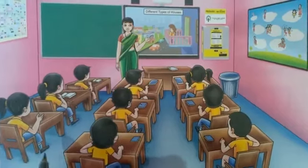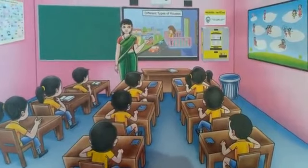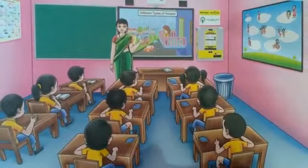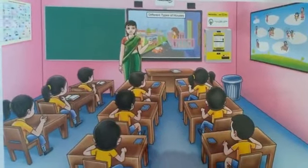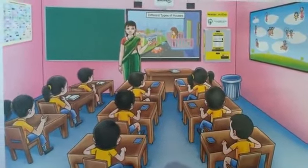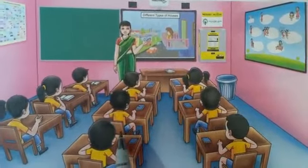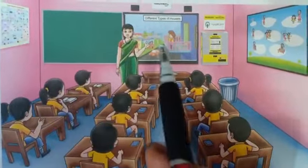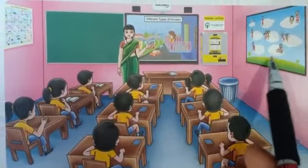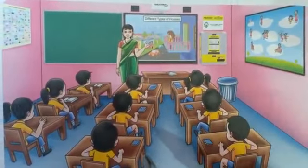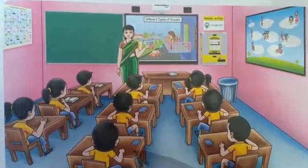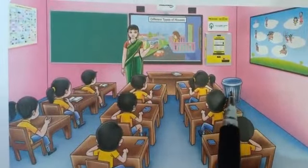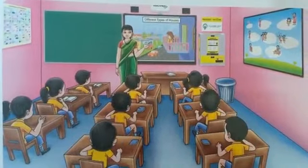Now kids, tell me which are the different things present in the classroom? Classroom mein koon-koon si chizhe hoti hai? As we can see: blackboard, projector, display board, benches, table and dustbin.